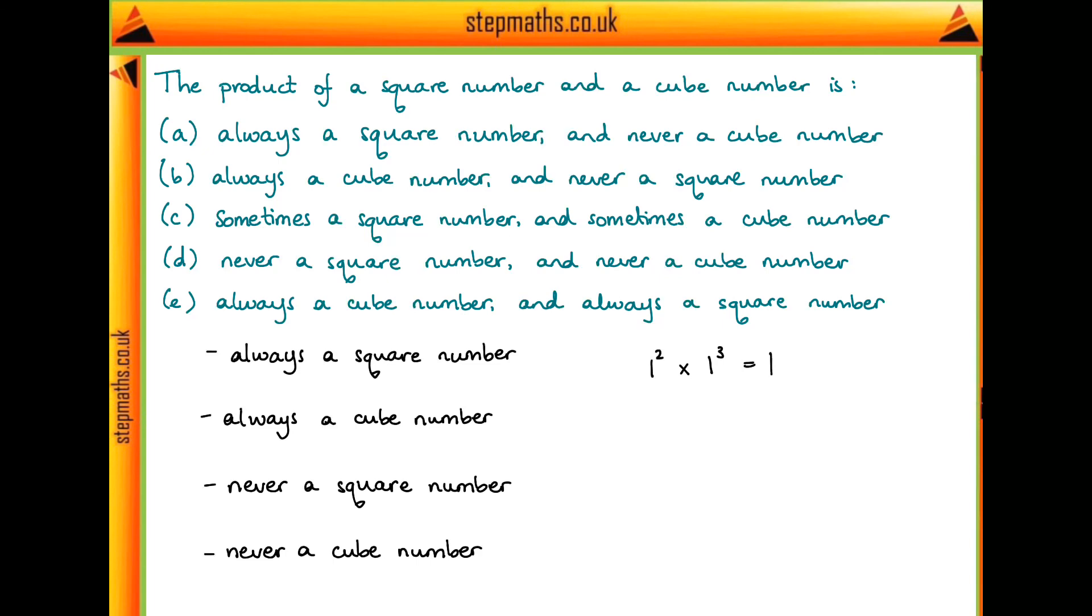Well it's both because one to any power is one. So that immediately disproves these two statements—our product could be a square number and it could be a cube number. So we can rule out any options which contain these statements, which would be a, b, and also d. We've just got to choose between c and e now.